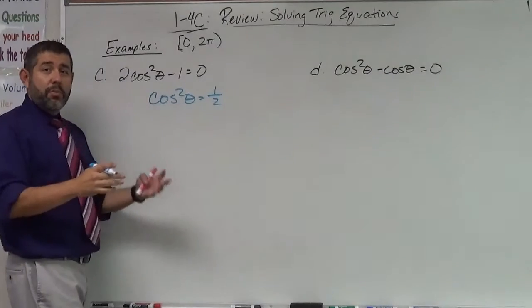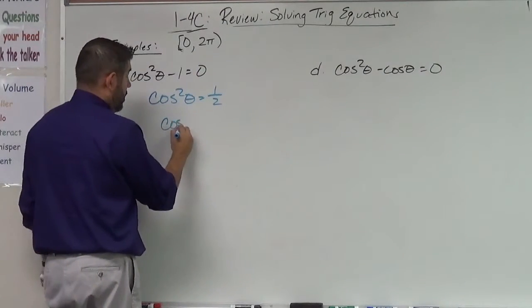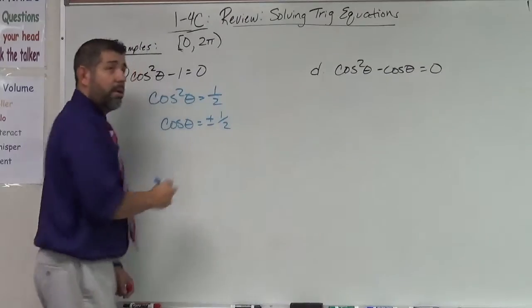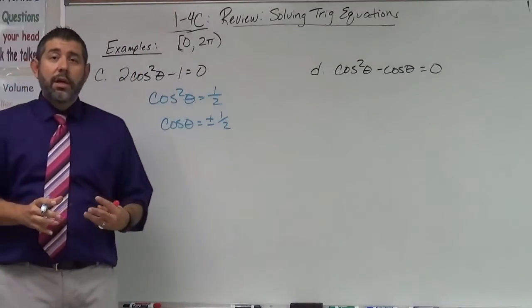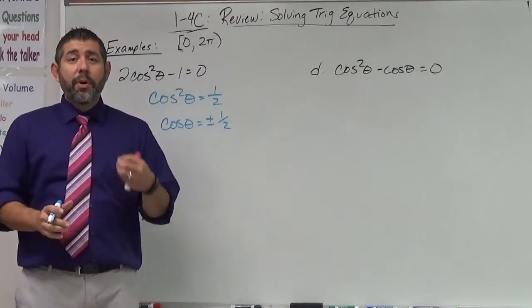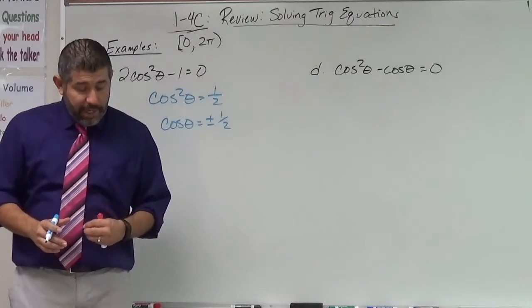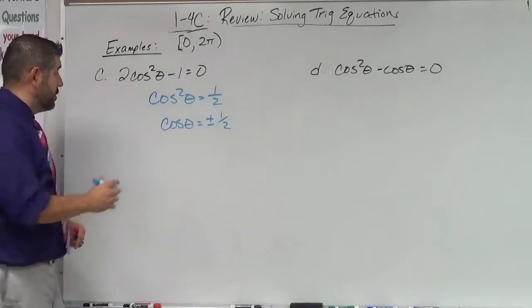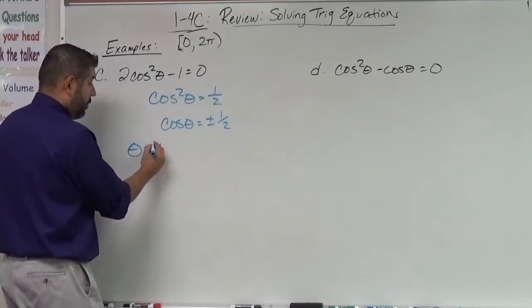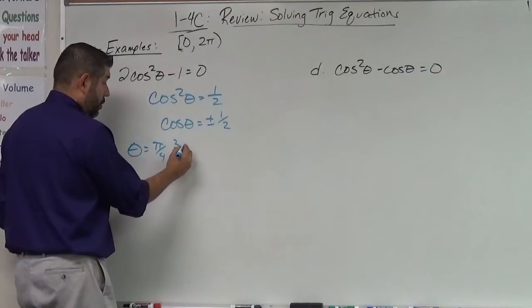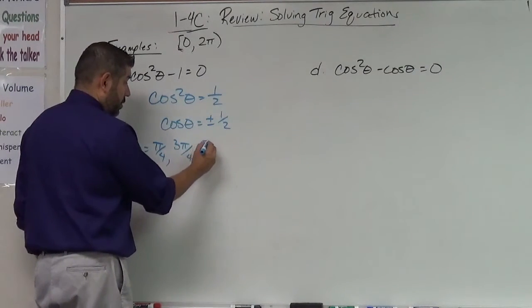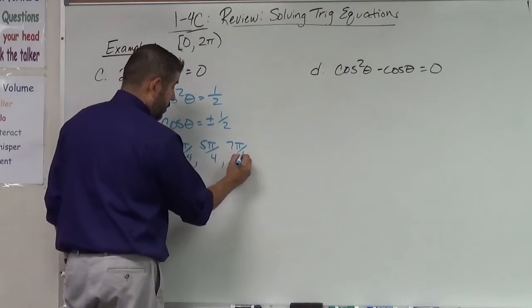And then I would take the plus or minus square root of both sides. So I'd have cosine theta equals plus or minus one half. So what I'm looking for on the unit circle is where is the x coordinate either positive one half or negative one half. That shows up in four places. That's going to be at pi over four, three pi over four, five pi over four and seven pi over four.